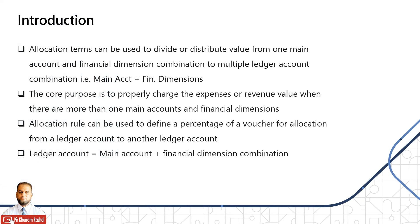Allocation terms are basically used to divide or distribute the value from one main account and financial dimension combination to multiple ledger account combinations. When we say ledger account in Dynamics 365 Finance, it means main account plus financial dimensions. Previously it was only a ledger account, but now since we have financial dimensions defined in the account structure or advanced rules linked with the main account, as a whole we can call it a ledger account.